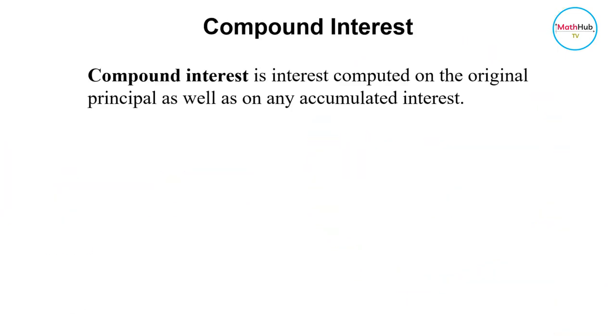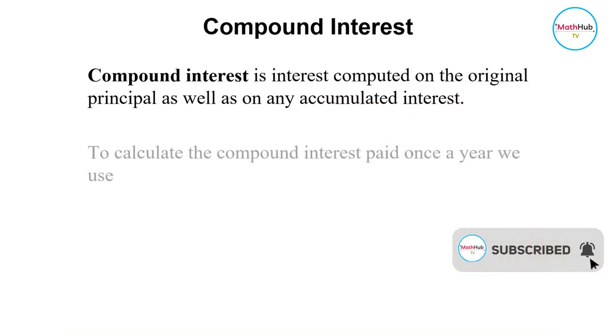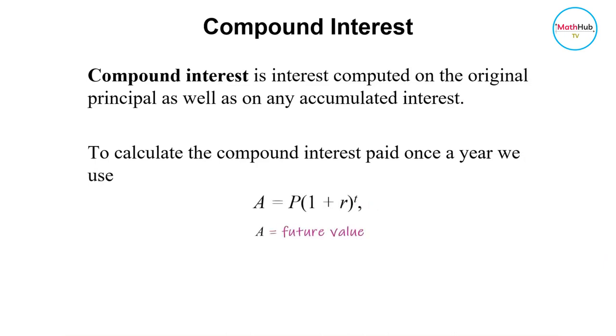Compound interest is interest computed on the original principal as well as on any accumulated interest. To calculate the compound interest paid once a year, we use this formula here. A is future value,